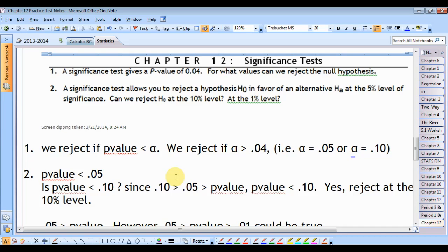Number two, a significant test allows you to reject the null hypothesis in favor of the alternative at the 5% significance level. Can you reject that null hypothesis at the 10% level? Yes. Can you reject that at the 1% level? We don't know.